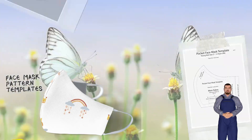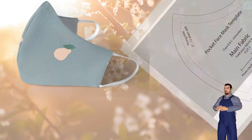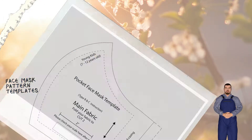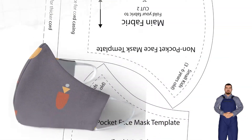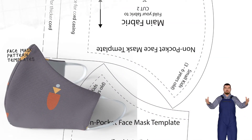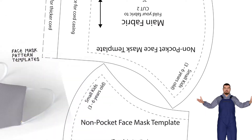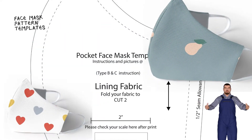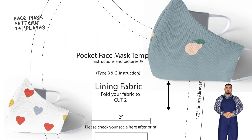4. Cricut Machine SVG files with seam allowances of 1/4 inch included for Type A, and 3/8 inch for Type B and C. Use on Type A, B, and C: men, women, teenagers, kids 7 to 12, kids 3 to 6.